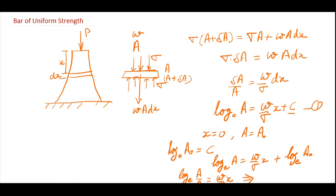This will give me that A is equal to A naught times e raised to power wx by sigma. So this is an expression that represents the variation of area, so that means this area should vary exponentially so that my stress will remain constant throughout this bar. So at any point, at any section, its stress will be sigma.